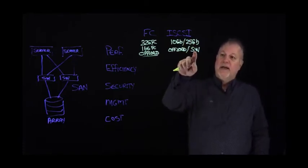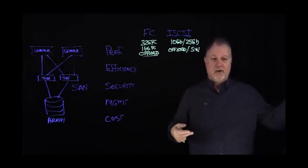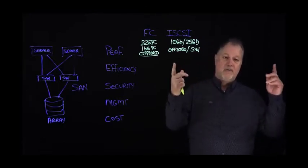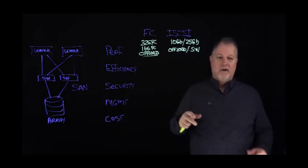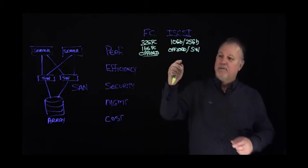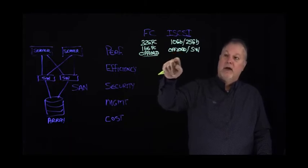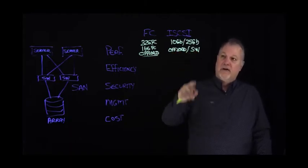Now the difference here is a software initiator requires me to use the processor, the driver, the memory of the server, and all those things. Well, guess what? That requires time, and time means latency. So if you want low latency, you use an offloaded technology like Fiber Channel or iSCSI offload. If you're using software initiators for iSCSI, your latency is going to be higher.